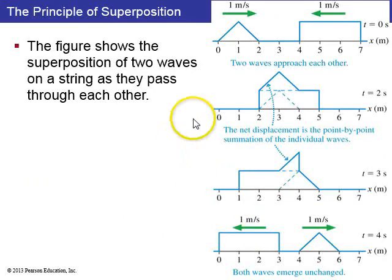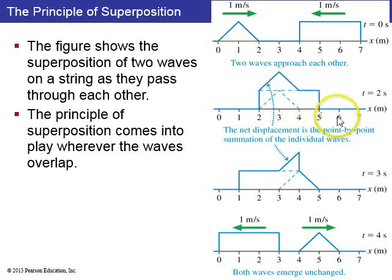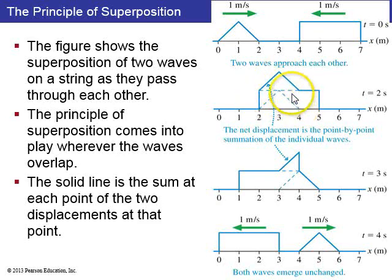So, it's pretty simple. Here we have a little triangle wave moving from left to right, which encounters a rectangular wave moving from right to left. This is T equals zero seconds. When you get to T equals two seconds, they coexist. And the principle of superposition says that you just do the sum of the individual waves to find the displacement, the solid line is the displacement at that point.